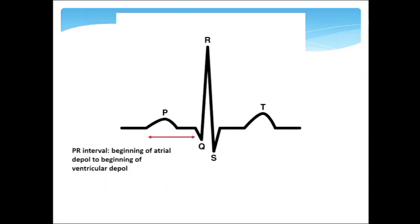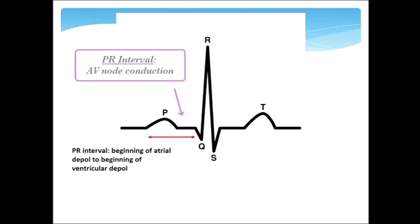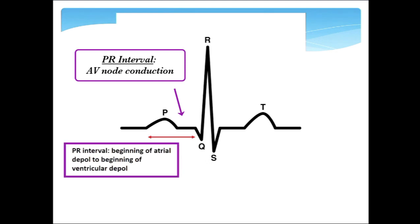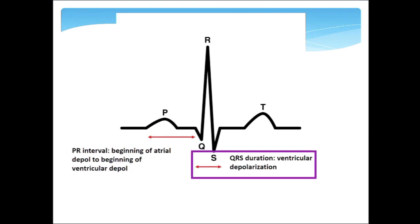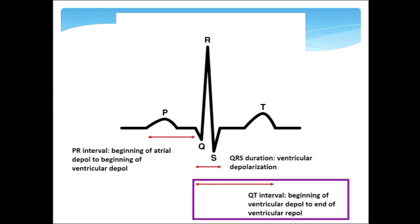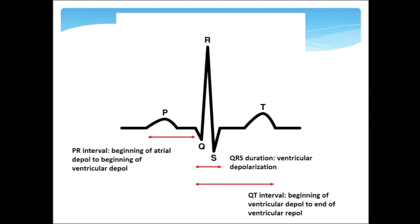There are a couple of intervals, in addition to just knowing the waves, that you might be asked about. There's the PR interval, which represents the beginning of atrial depolarization until the beginning of ventricular depolarization. The QRS duration is a measurement of how much time it takes for the ventricular myocardium to depolarize. The QT interval is the total summation of time between the beginning of ventricular depolarization until ventricular repolarization has wrapped up — the total time the ventricle is undergoing ion flows. This is important because many drugs alter this process and predispose to ventricular electrical problems, most specifically arrhythmias.